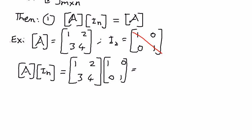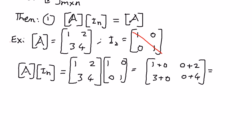So: 1×1 + 2×0 = 1, then 1×0 + 2×1 = 2; 3×1 + 4×0 = 3, and 3×0 + 4×1 = 4. As you can see, 1+0=1, 0+2=2, 3+0=3, 0+4=4. The property is correct. When we have a square matrix and multiply it by an identity matrix of the same size, the resulting matrix is the same as the original matrix.